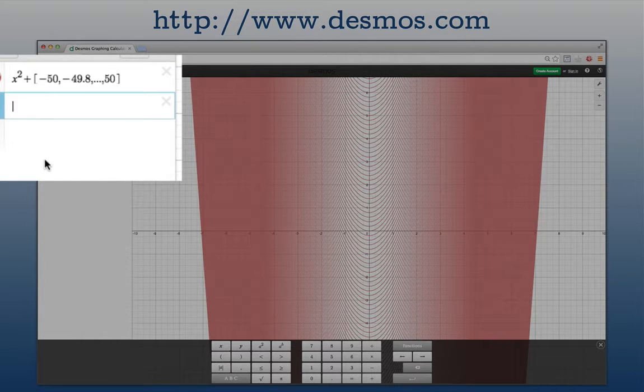Put in the first two terms and the last term and it'll plot x squared plus c for all those values of c. Desmos is really smart - if you put in a different number for the second value, it'll interpolate and realize you want a different step size. Very powerful and perfectly suited for plotting many particular solutions at once.